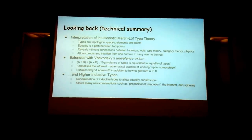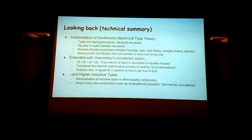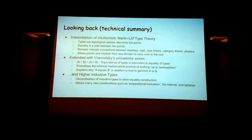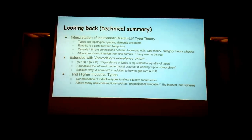Looking back: it's an interpretation of dependent type theory by types as topological spaces, elements as points, and equalities and equivalences as paths. It reveals intimate connections between topology, logic, type theory, category theory, physics, and so on. It allows proofs and intuition from any of these domains to carry over to all the rest. Extended with the univalence axiom — A equivalent to B is equivalent to A equals B — or equivalently, equivalence of types is equivalent to equality of types.